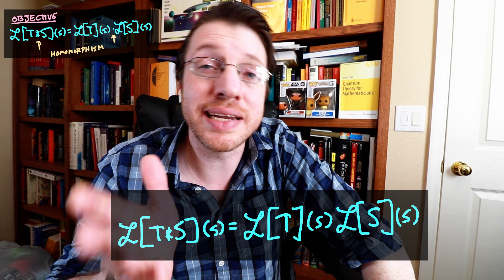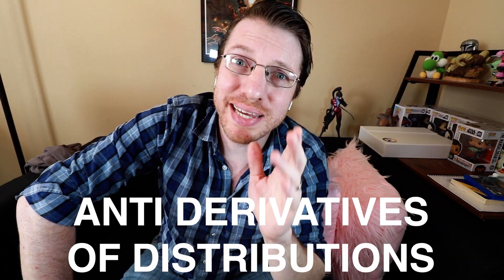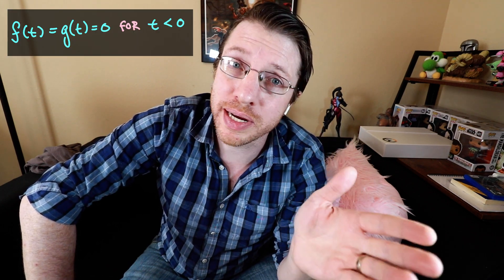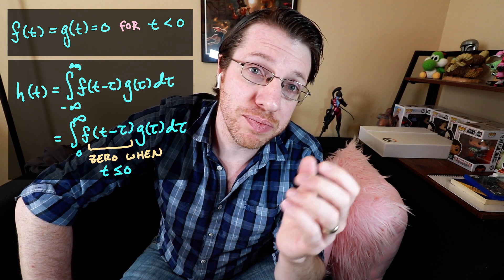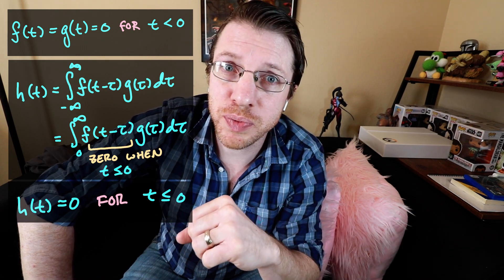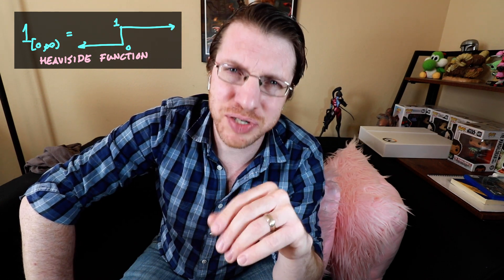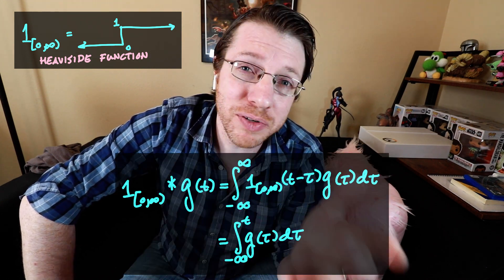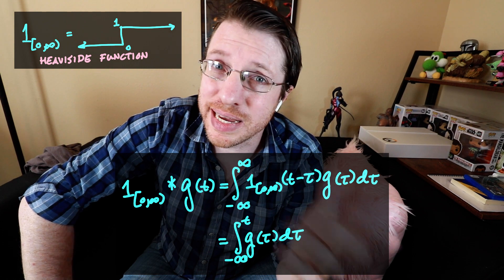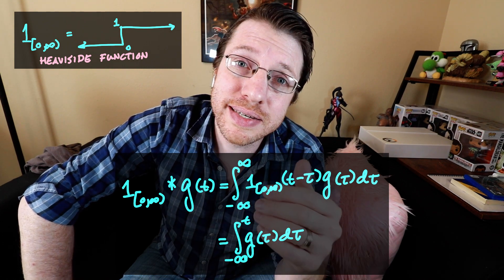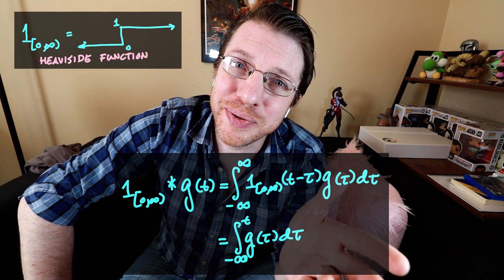Now let's define an antiderivative of a convolution. There's one really nice property of convolutions of functions to keep in mind: if the functions are supported only on the half-line [0, ∞), then the convolution itself is also only supported there. If we take the Heaviside function — viewing it as a function, not a distribution — and convolve it with g, the result is the antiderivative of g.